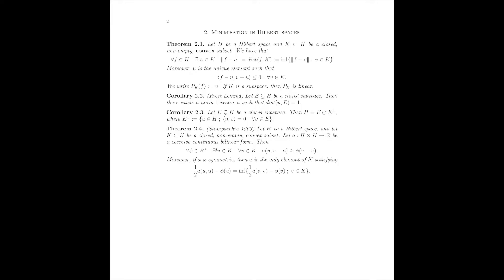We now come to the conclusion of this second chapter and prove our key minimization result in Hilbert spaces — the theorem due to Stampacchia in 1963. It's very similar to the Lax-Milgram theorem; it's a generalization where instead of working on the whole space, we work on a closed non-empty convex subset. We have a coercive continuous bilinear form, and we show that for any linear functional, there exists a unique solution in the convex set K.